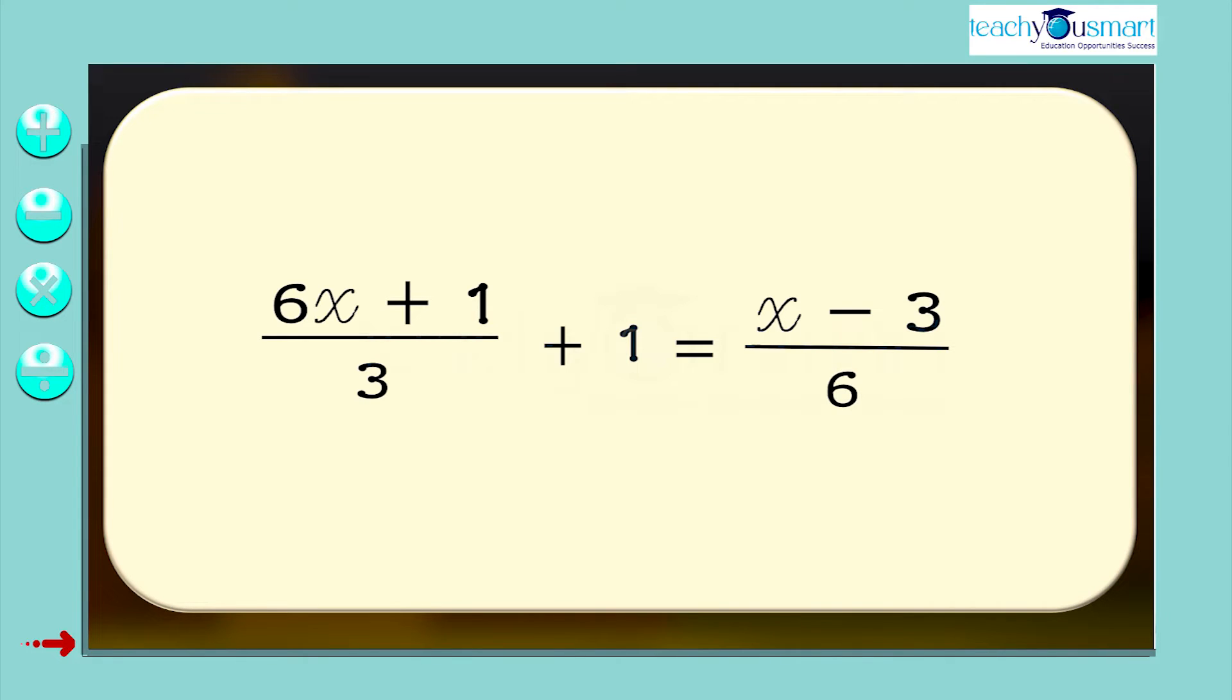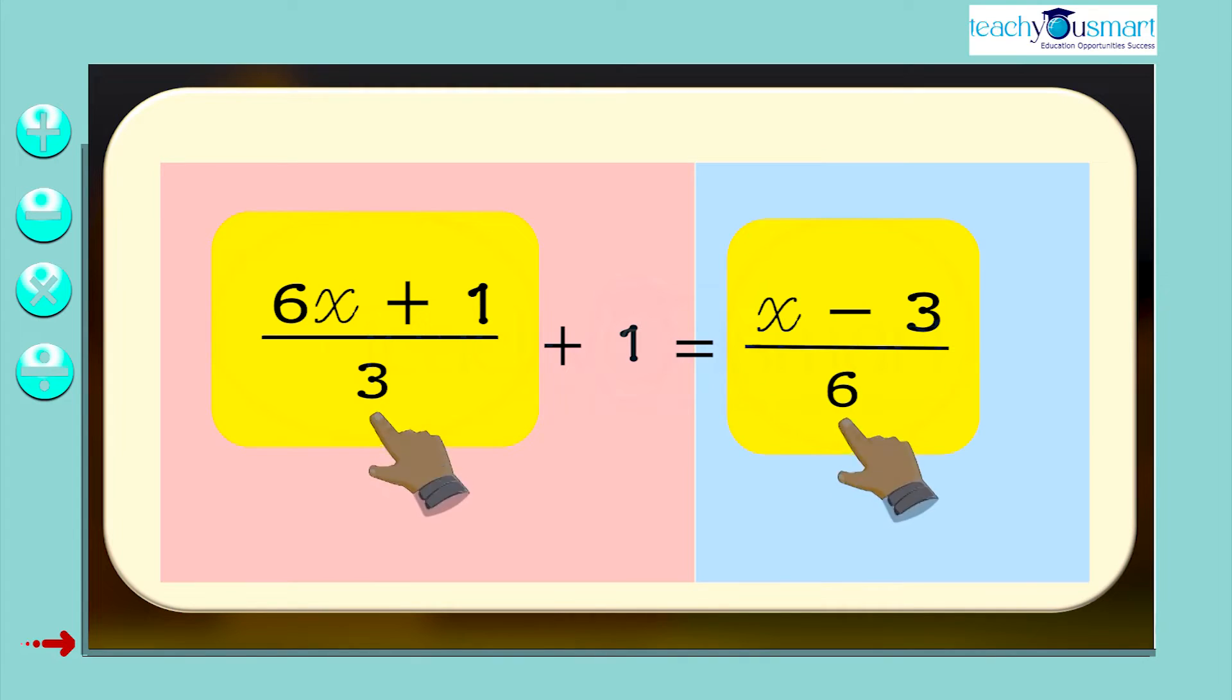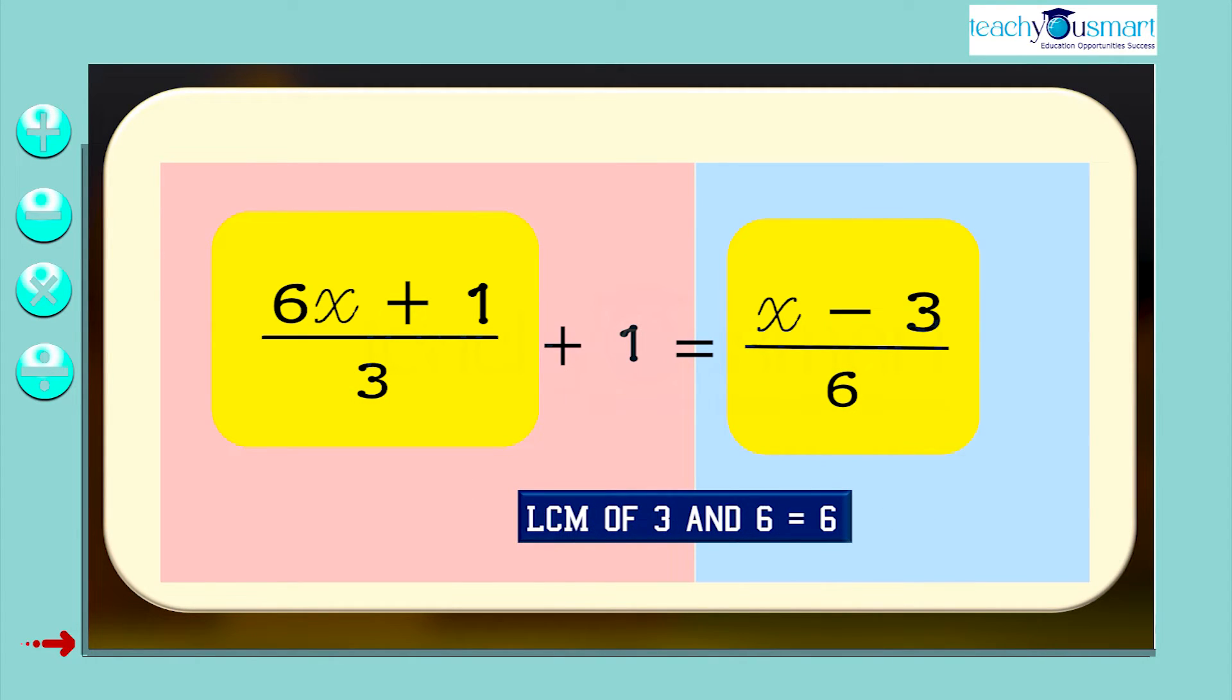There are three terms in the equation: (6x + 1)/3, 1, and (x - 3)/6. In this equation, fractions are on both LHS and RHS and the denominators are different. So, to simplify the equation, find the LCM of denominators. Take the LCM of the denominators, 3 and 6, we get 6.